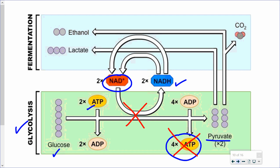Alcohol fermentation takes place in yeast and is a two-step process where yeast take the product of glycolysis — pyruvate — and convert it into ethanol. Along the way, carbon dioxide is also generated. So if you're using yeast for baking bread, the bubbles causing the bread to rise are carbon dioxide bubbles given off by this fermentation process.